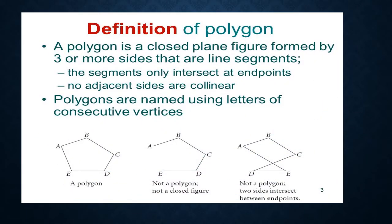A polygon is a closed plane figure which is formed by three or more sides. The sides are considered as line segments. There are two conditions for polygons: one is that the segments only intersect at end points, and no adjacent sides are collinear.